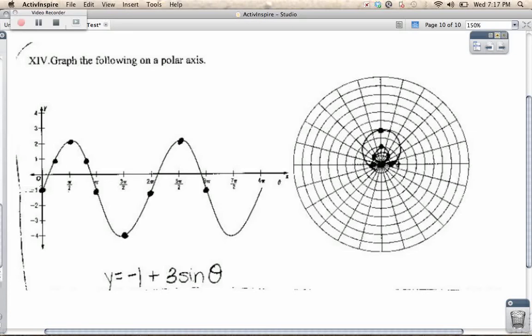So at negative 1, at the value of 0, negative 1, that's going to be radius of 0 and out negative 1, or excuse me, angle of 0 and out negative 1. So 0, negative 1 puts me here.